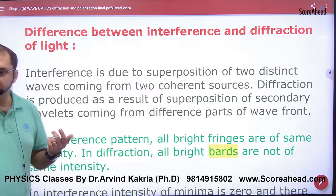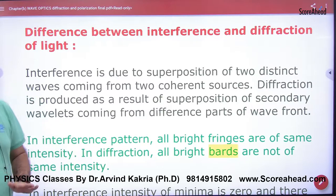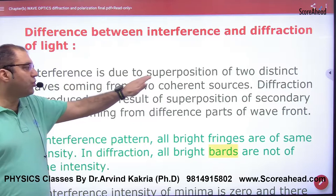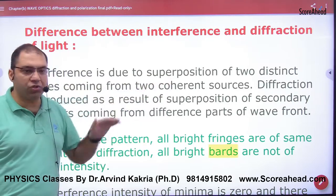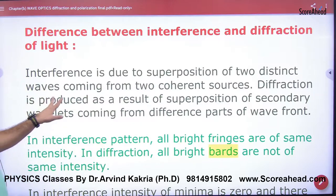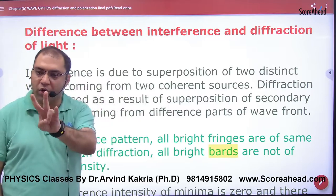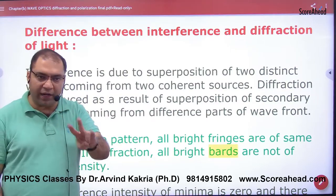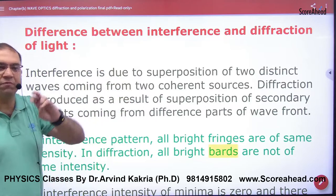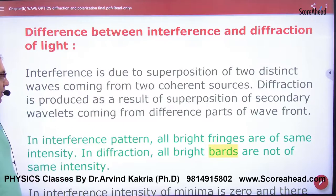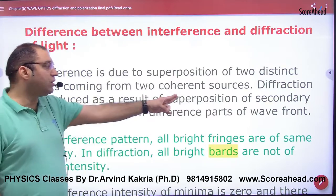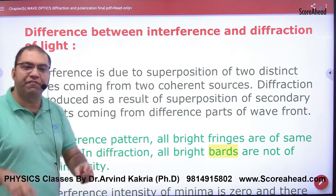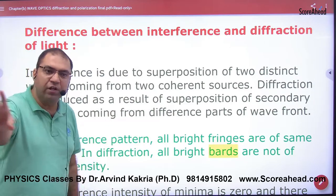The difference between interference and diffraction: Interference is due to superposition of two distinct waves coming from two coherent sources — those sources produce identical waves. Diffraction is a result of superposition of secondary wavelets coming from different parts of the wavefront.